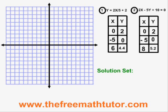Graphing the equation on the left, I will put points at 0, 2, negative 5, 0, and 6, 4.4. And then I will draw a line through these points.